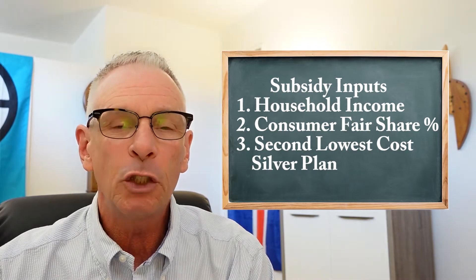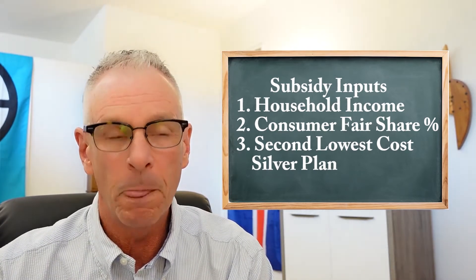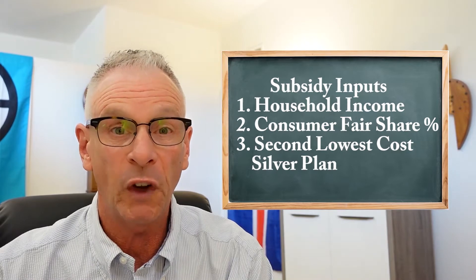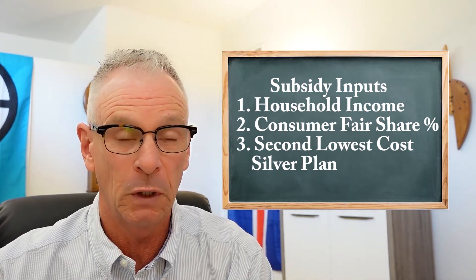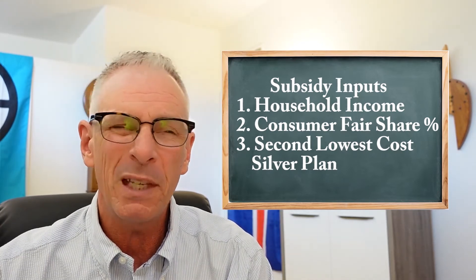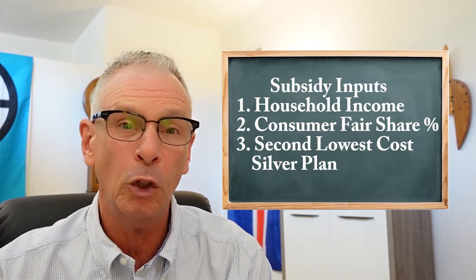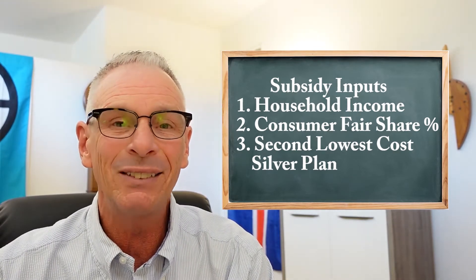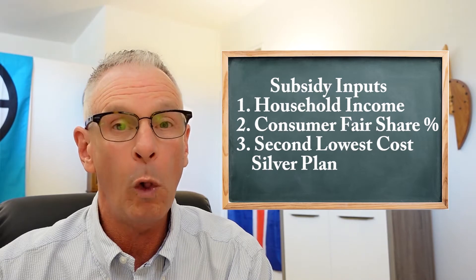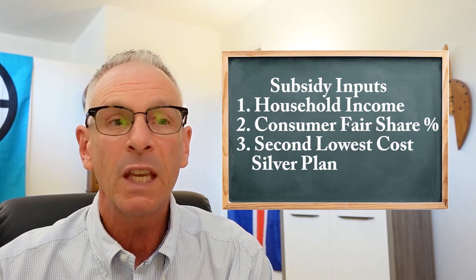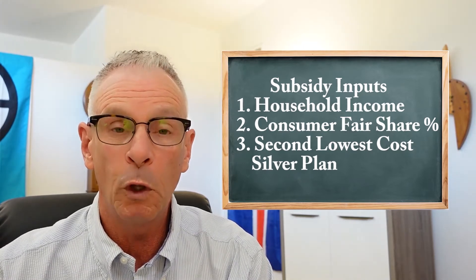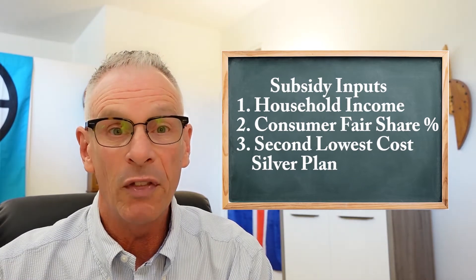Next is the Consumer Fair Share Percentage. The Consumer Fair Share Percentage is what the ACA has determined is the consumer's fair share for health insurance — what they should be responsible for. And it is a function of your income. It's a little bit quirky to determine that, but I'll show you a graph. And then finally is the annual amount of the second lowest cost silver plan, because the goal of the Affordable Care Act is to make the second lowest cost silver plan — this benchmark plan — affordable relative to the consumer fair share.